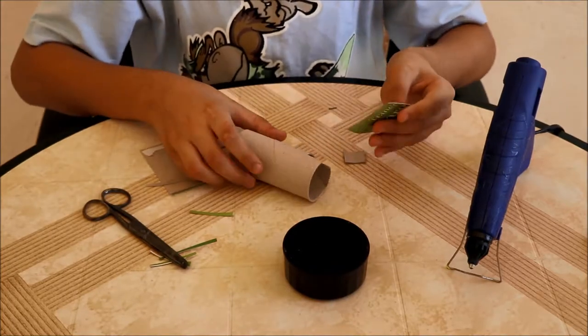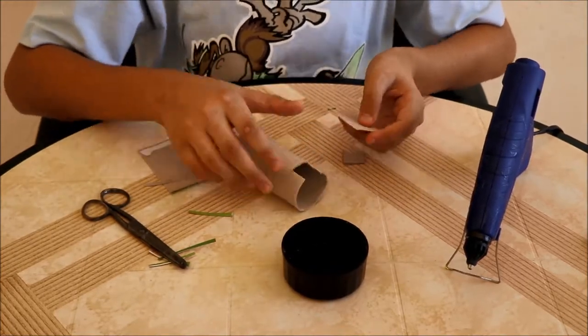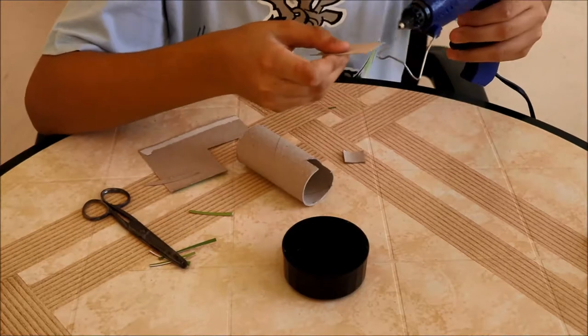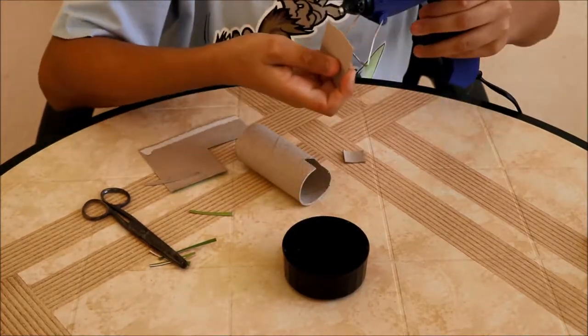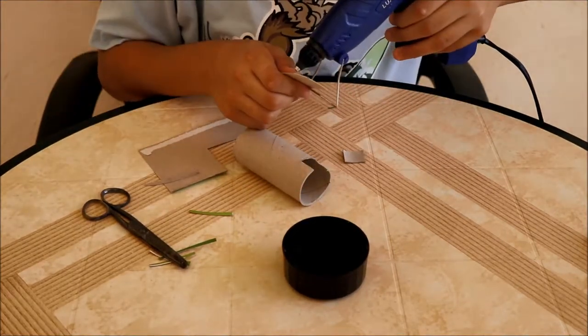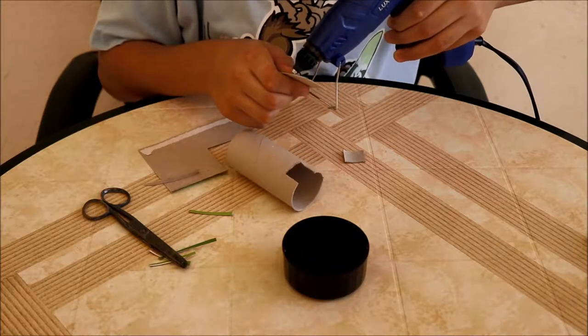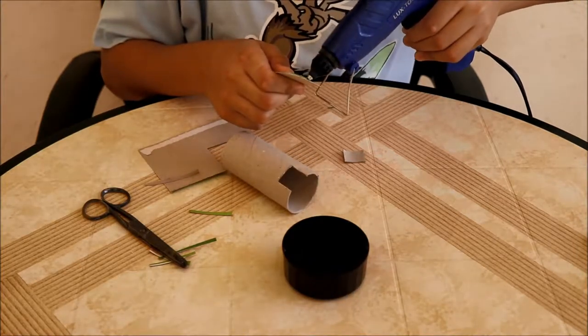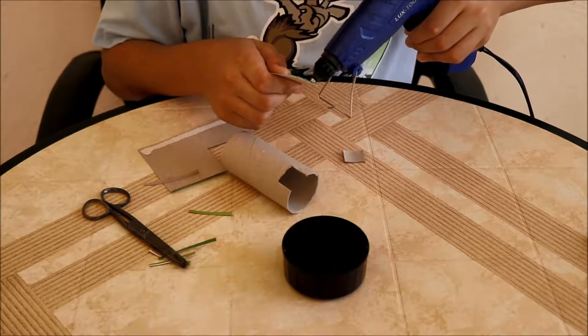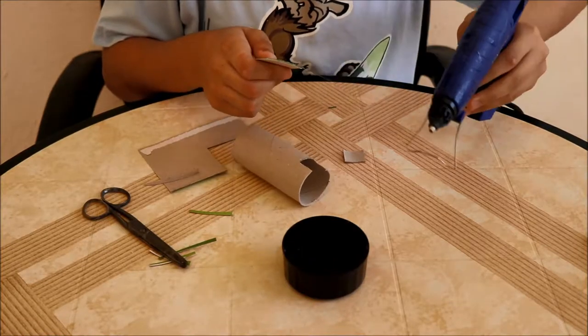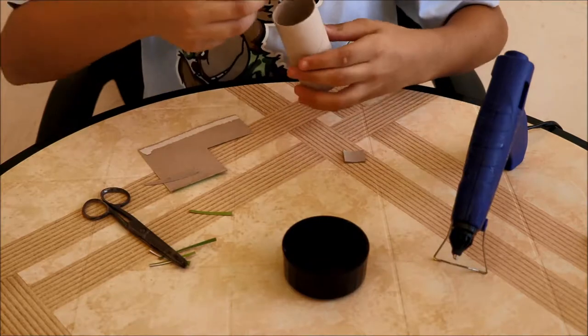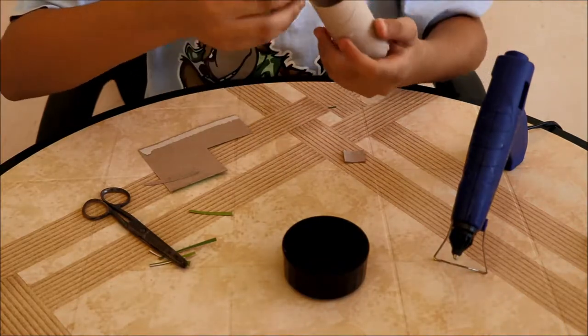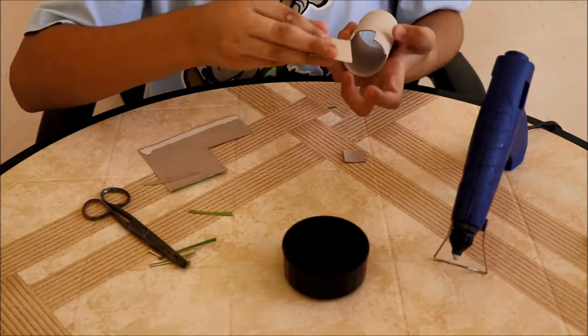Now I'm going to hot glue it with the toilet roll. I'm going to do a straight line of glue gun with one of the edges. There we go. Now you have to hurry up and put in the straight line from here.